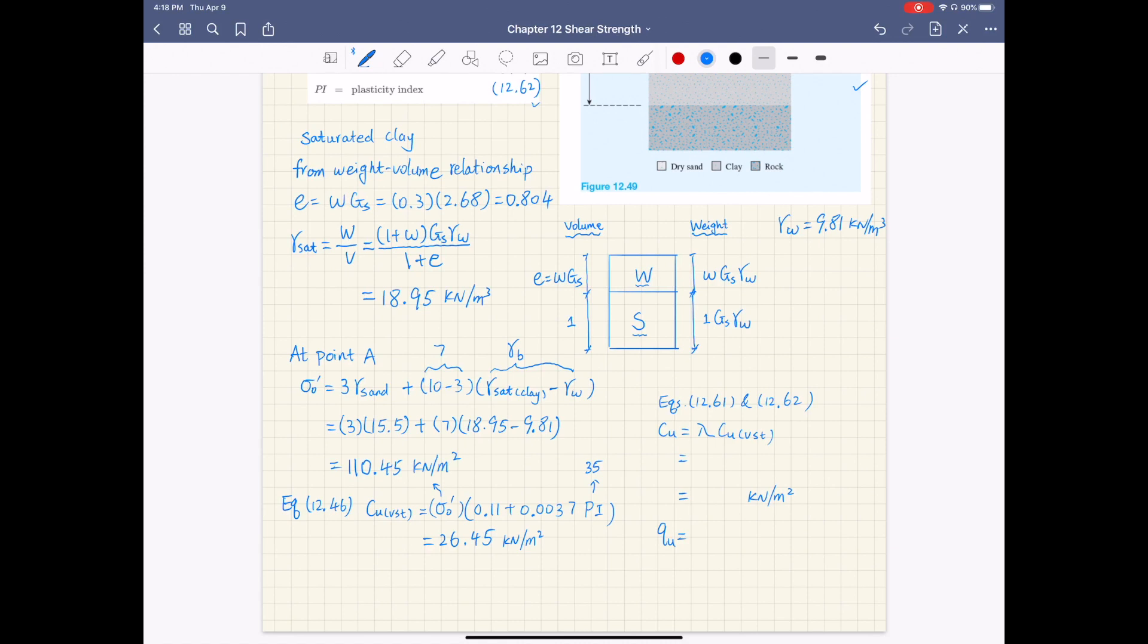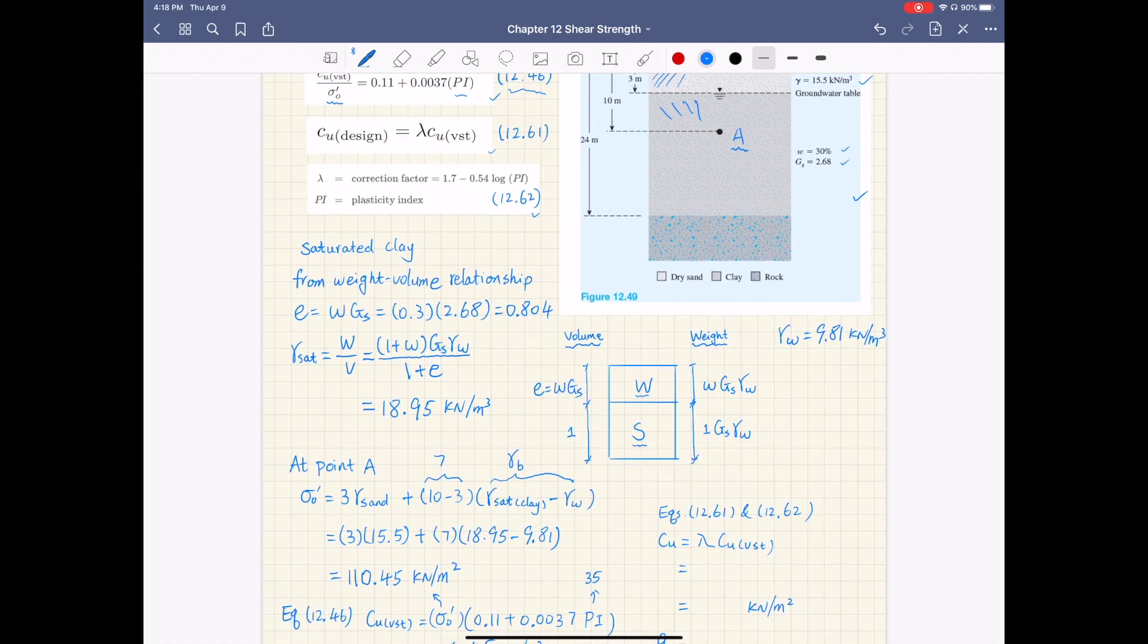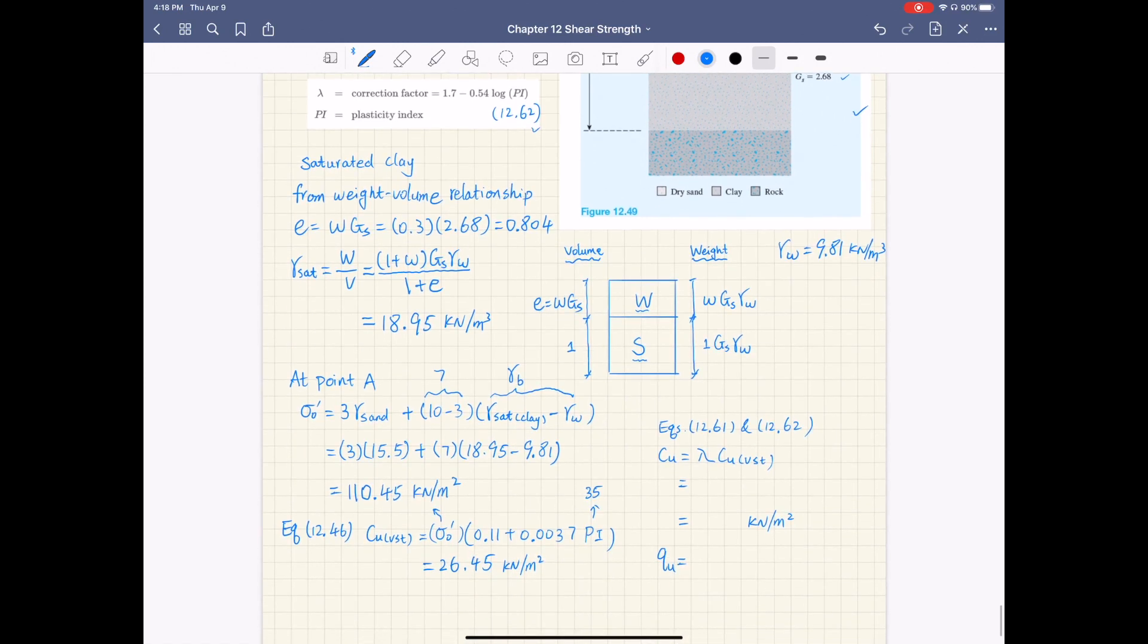Once we have the CU VST, we plug in equation 12.61 for the correction factor. If you plug in numbers here, this correction factor lambda is 1.7 minus 0.54 times the natural log of plasticity index, which is 35, times CU from equation 12.46, which is 26.45. So our CU value is 22.91 kilonewtons per meter squared.